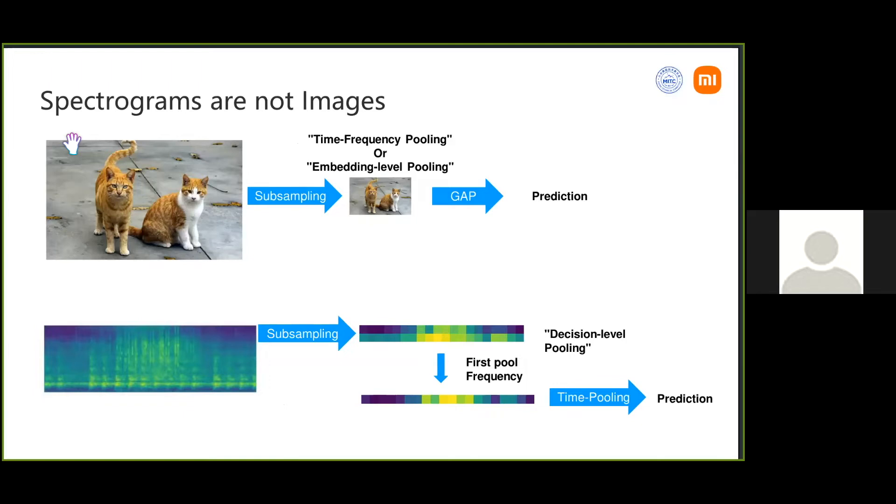What I want to emphasize in this talk - I think it's one of the main reasons why my model worked so well - is that spectrograms are not images. When you have an input image, what we usually do on AudioSet right now for sound event detection or audio tagging is actually just doing the same pipeline as for images. On the top you see an image pipeline where you take an image, subsample it through a network, then take a time-frequency or embedding-level pooling, or GAP which is global average pooling.